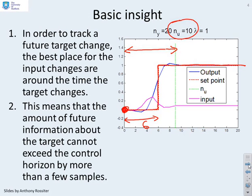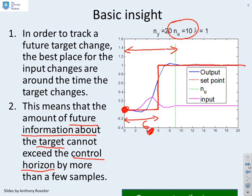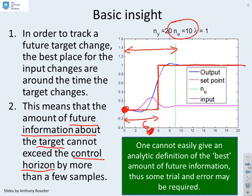Here's the key thing. The amount of future information about the target should not exceed the control horizon by more than a few samples. I've only looked six samples into the future to see this target change, but I've allowed myself input moves that go just a bit beyond that, and that's worked well. We cannot easily give an analytic definition of the best amount of future information, but the amount of future information we allow ourselves should be much less than ny.